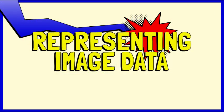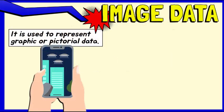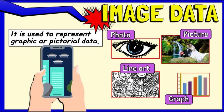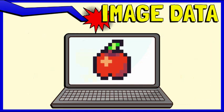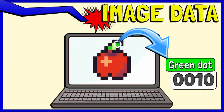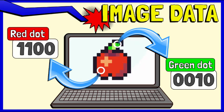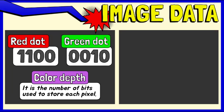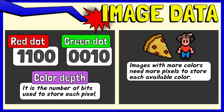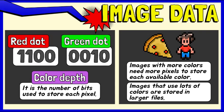Let's see how bits can be used to store images. To work with images such as photos, pictures, line arts, and graphs, they must be converted into binary in order for a computer to process them so that they can be seen on our screen. Images can be digitized by treating them as a series of pixels or colored dots. Each dot is assigned a binary number according to its color — for example, a green dot is represented by 0010 and a red dot by 1100. The number of bits used to store each pixel is called the color depth. Images with more colors need more pixels to store each available color, meaning that images that use lots of colors are stored in larger files.